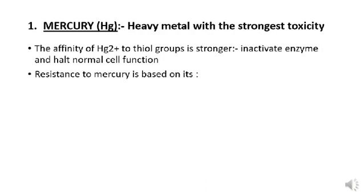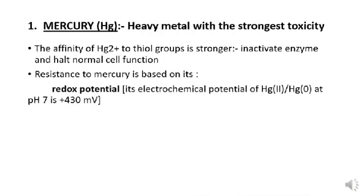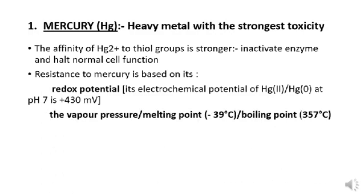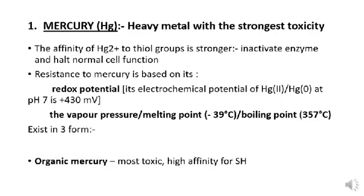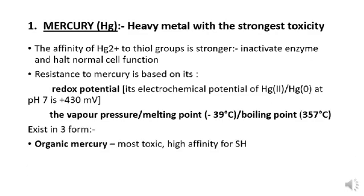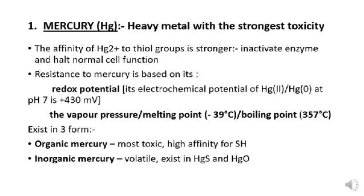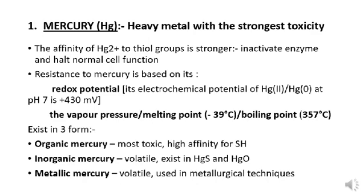Resistance to mercury is based on its redox potential of +430 mV at pH 7, as well as its vapor pressure, melting point, and boiling point. Mercury exists in three forms: organic mercury, which is the most toxic and has high affinity for thiol groups; inorganic mercury, which is volatile and exists in two forms; and metallic mercury, which is more volatile and used in metallurgical techniques.